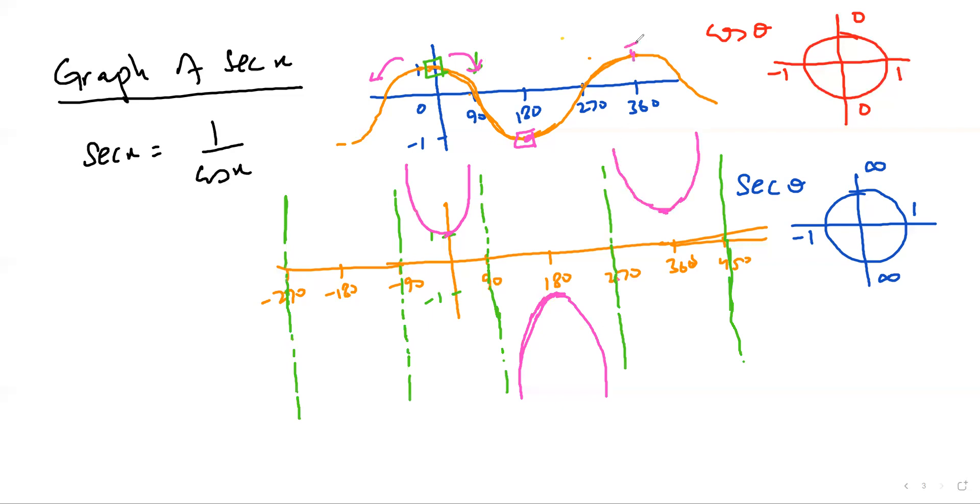You see, again, at 360, it is at 1. At 360, it is again at 1, but when it goes towards 0, the reciprocal of 0 is infinity. So this has to go towards infinity. So this is how you have the graph for the secant x.